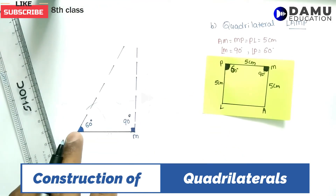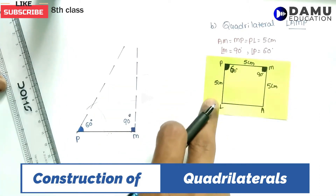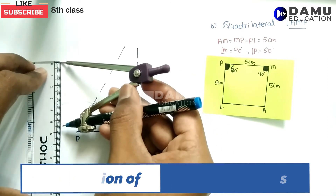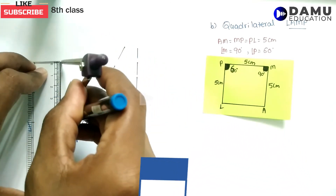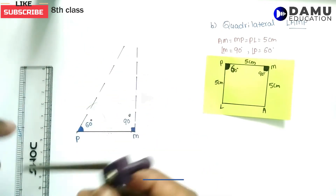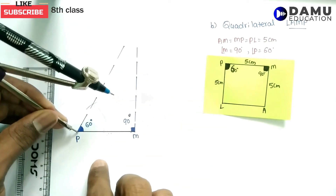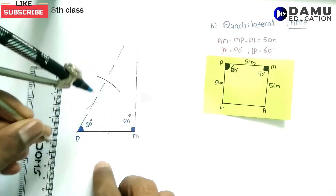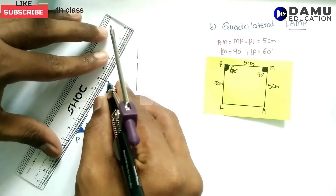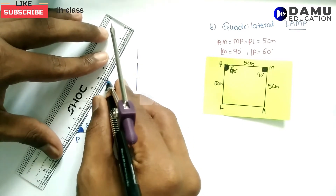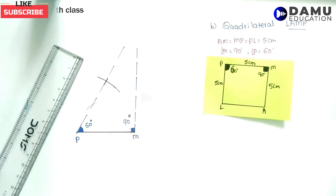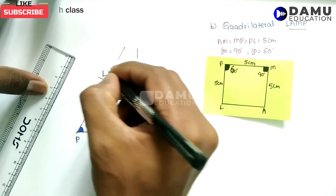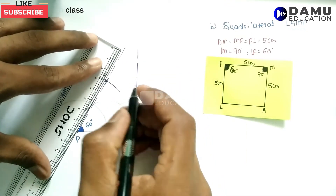From P we need to draw 5 centimetres. Let us take the compass and measure exactly 5 centimetres. We draw an arc from P on the 60 degree ray. This point where the arc intersects is point L. Let us join L to P.